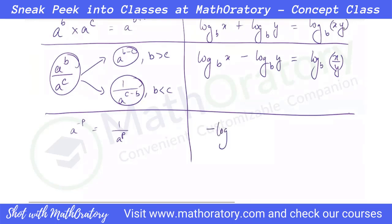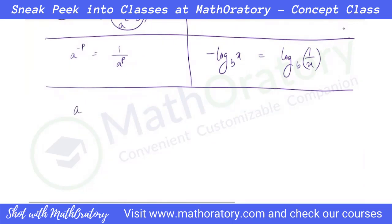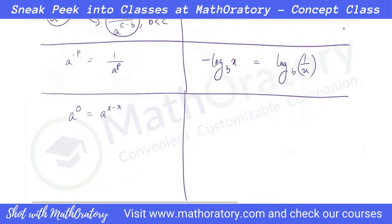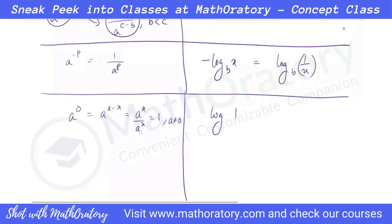Now, a to the power zero is basically a to the power x minus x. From the division property, this equals a to the power x upon a to the power x, which equals one — provided a is not equal to zero, because zero by zero is indefinite. So a to the power zero equals one, provided the base is non-zero. The base of a log will always be positive real numbers except one, so log of one is always zero for any acceptable base.